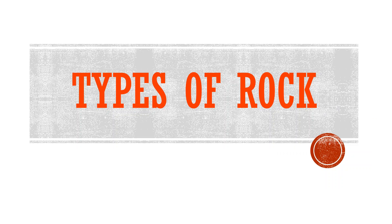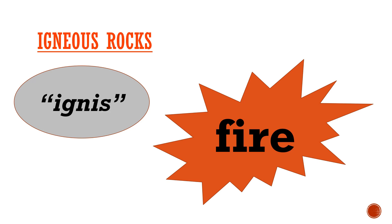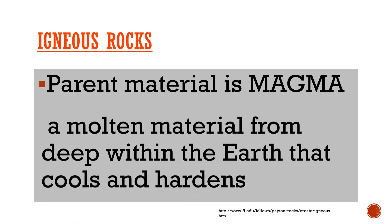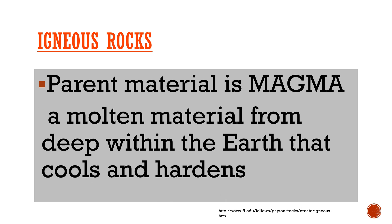Rocks can be divided into three major types based on the process of their formation: igneous, sedimentary, and metamorphic rocks. First is the igneous or magmatic rock. It comes from the Latin word 'igneus,' which means fire, and is formed when hot molten rock crystallizes and solidifies. The parent material of igneous rock is magma — molten material from deep within the earth. Scientists use the term magma for molten rock underground and lava for molten rock that breaks through the earth's surface.